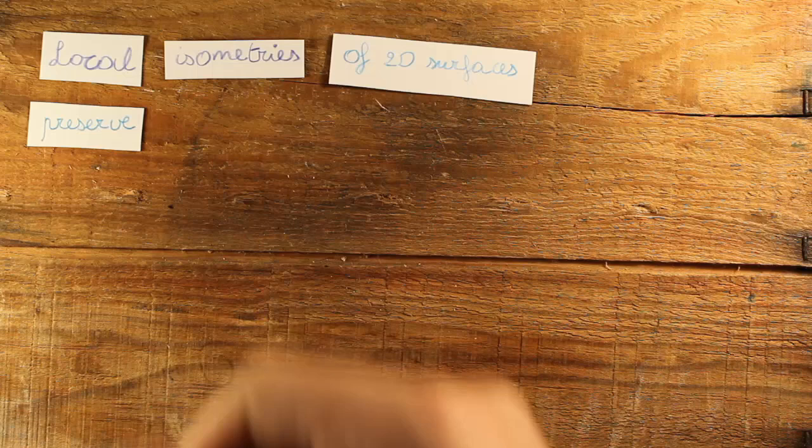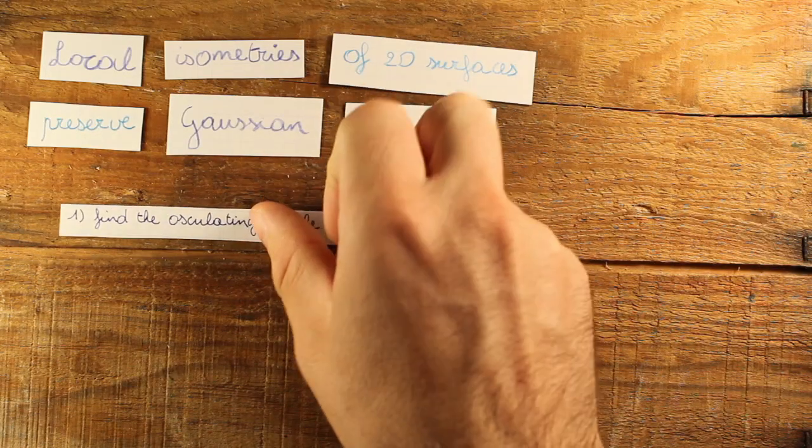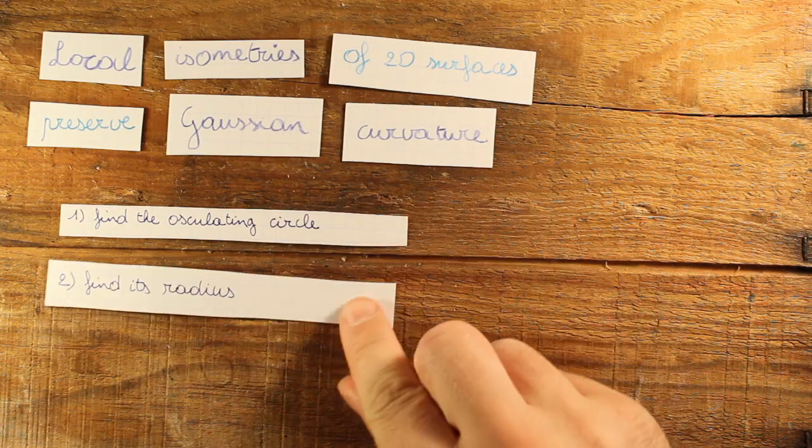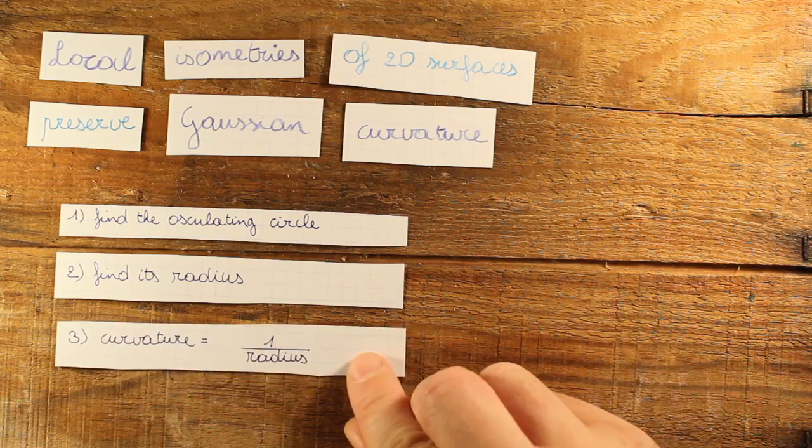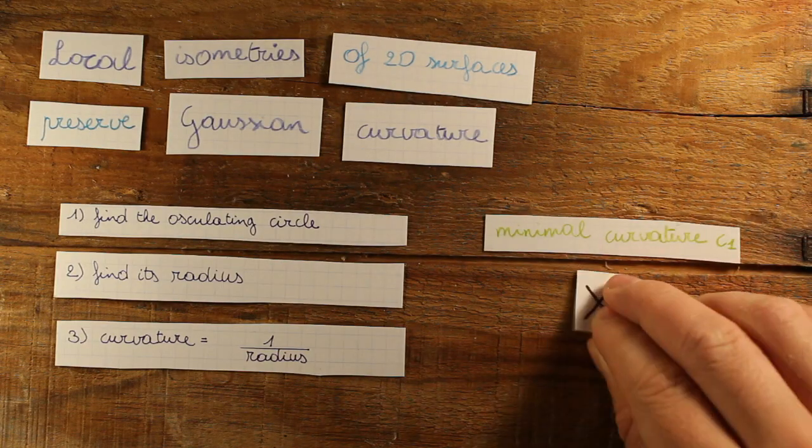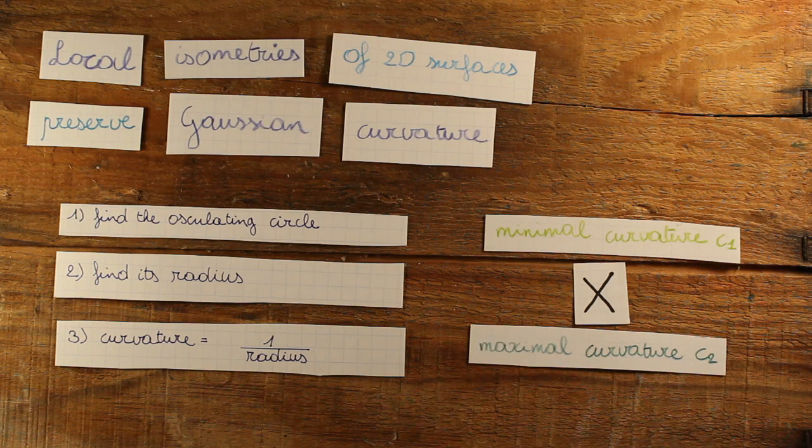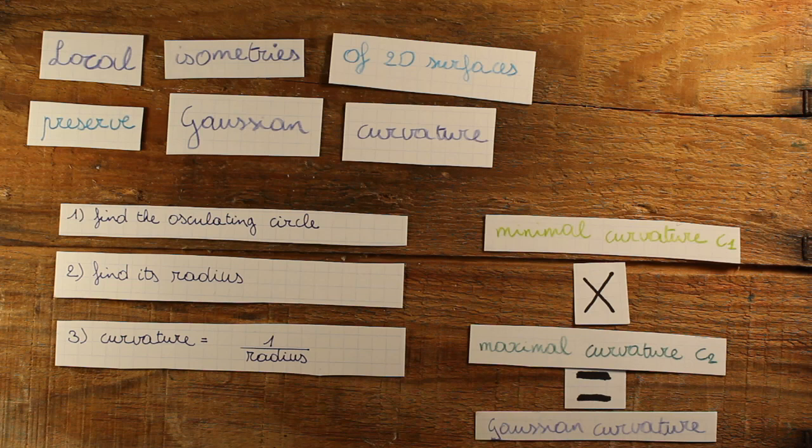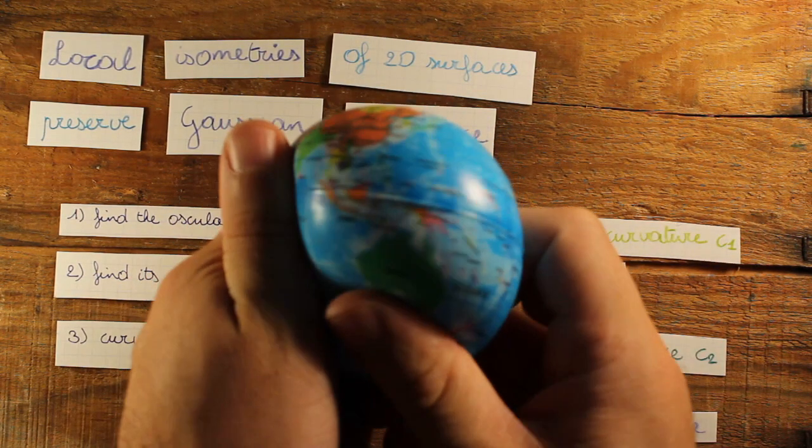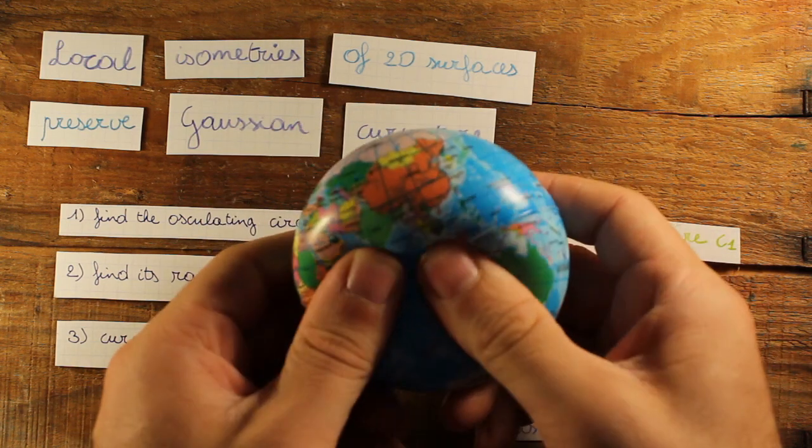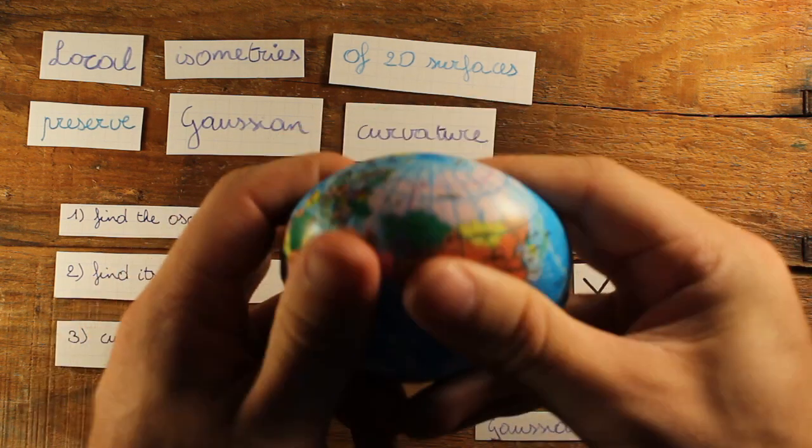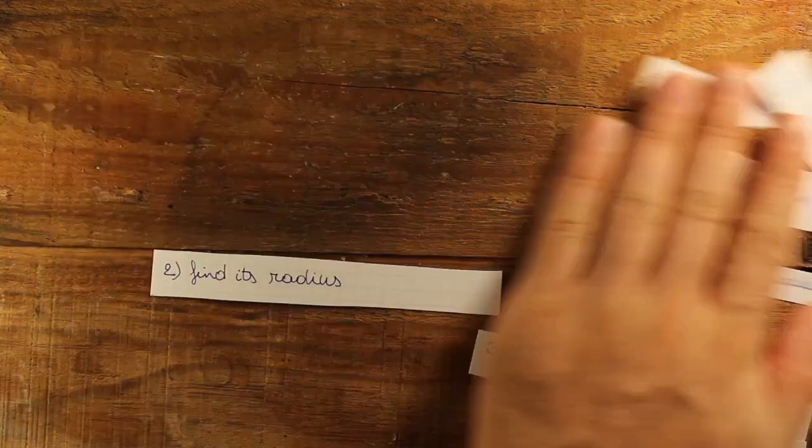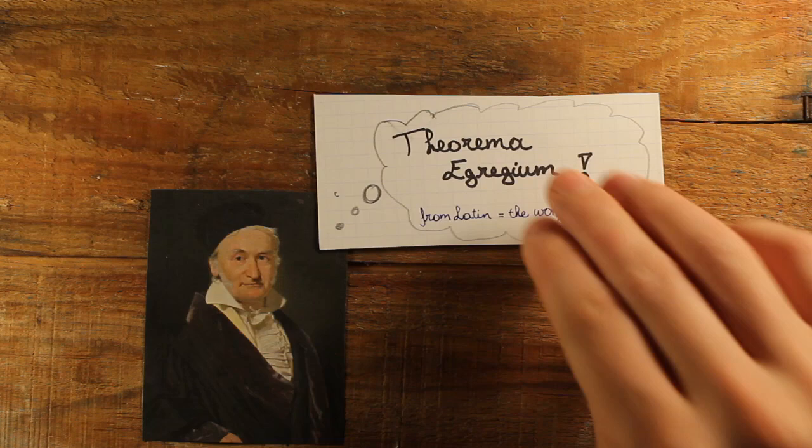Now we can fully understand Gauss's theorem. Take any surface and use the osculating circle in the definition, curvature is 1 divided by radius, to find the principal curvatures, and multiply those to find the Gaussian curvature. The theorem then states that this number cannot change under local isometry. That is, if you transform the surface without changing its local shape. In other words, no matter how hard you try, you can never change the curvature of a surface without distorting it in an unnatural way. I think this is a beautiful result, and Gauss as well. That's why he called it the wonderful theorem.